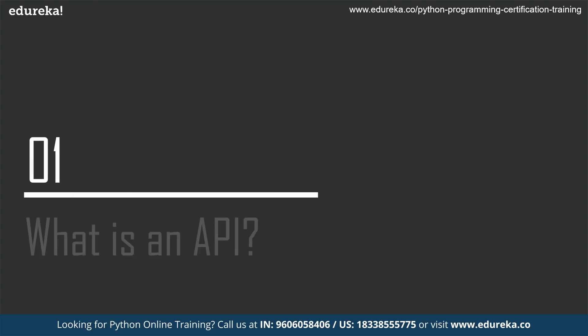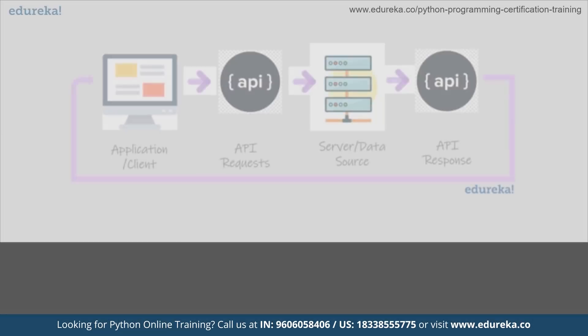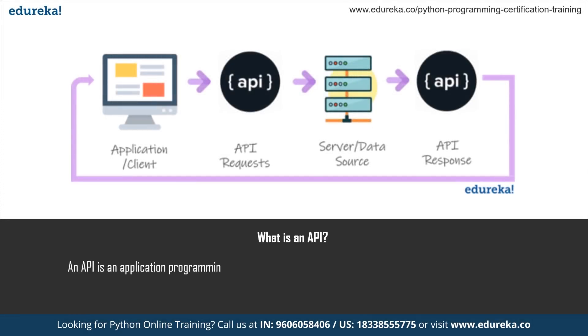So moving on, let's talk about what exactly is an API. A Python API is nothing but an Application Programming Interface, which is used to send and receive data on a server. It is primarily used to manipulate data on a server using external scripts. A simple example would be how Spotify, Twitter, etc. have their web APIs for users to retrieve data using the internet.